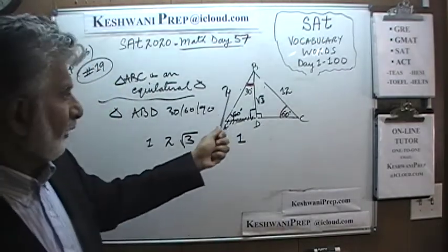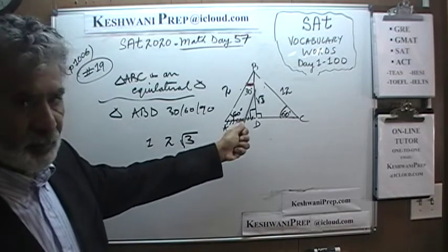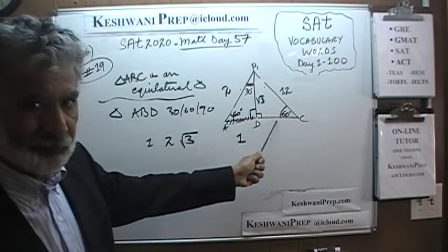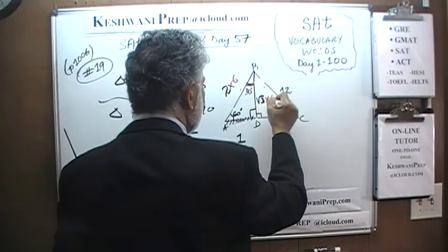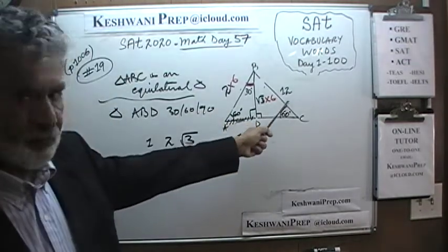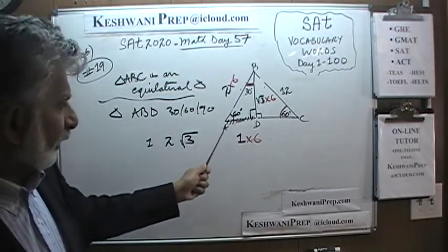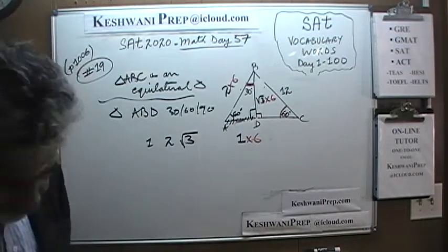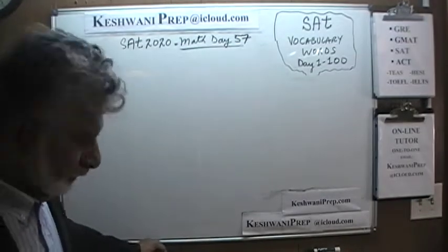This side AB is 12. Since both this angle and this angle are 60, that makes it at the very least an isosceles triangle, so this side is also 12. To get 12 from 2, we multiply by 6. So A to B is 12, B to D is 6 times root 3, and A to D is 1 times 6 — which is 6. That was number 19. I just prefer the equilateral triangle method.